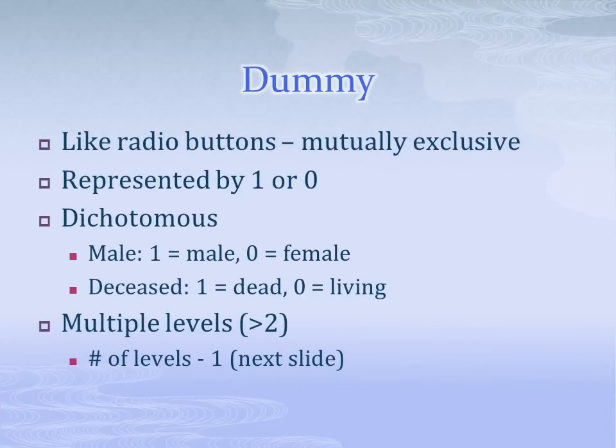In addition to having a funny name, dummy variables are a special kind of nominal variable. They are mutually exclusive and are represented as either presence or absence of a value. For example, if my variable is male, then a 1 would indicate that the respondent is male, and a 0 would indicate that the respondent is not male, and thus is female. Since we can assume those who are not male are female because these two categories are mutually exclusive, we only need to include a variable called male — including a variable called female would be redundant. If the variable includes multiple levels beyond two categories, we need to include variables for all but one of those categories.